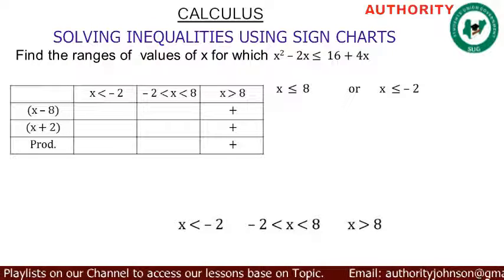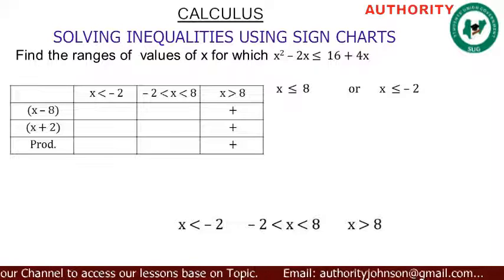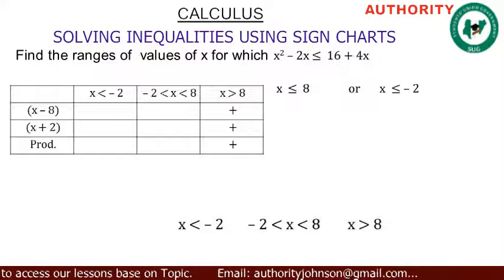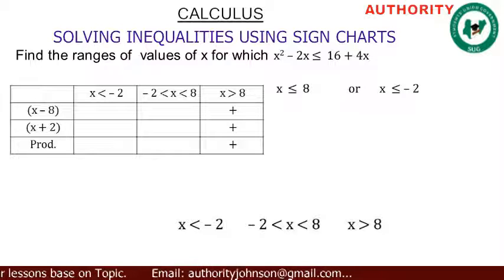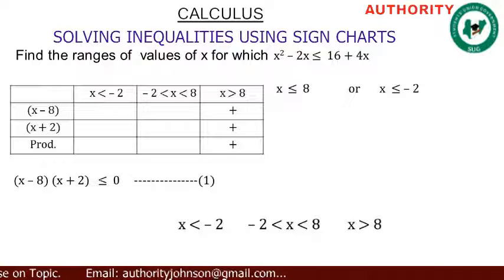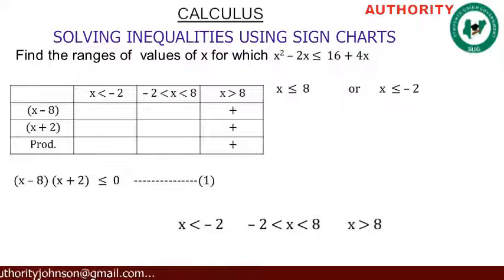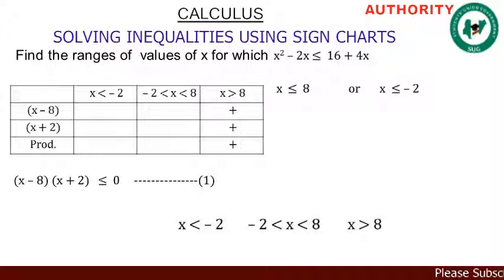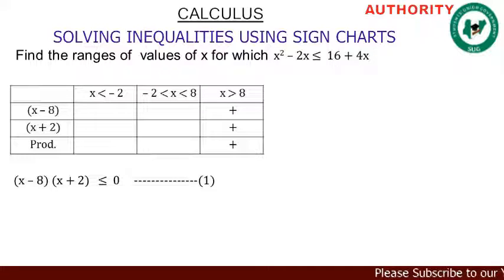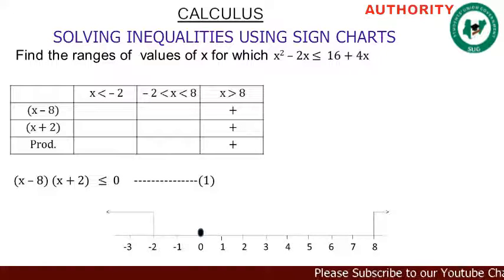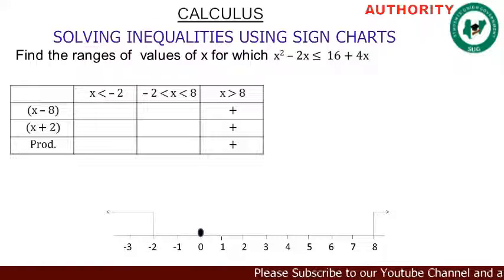In the first column, we write the values we obtained: x minus 8 (the first expression), x plus 2 (the second expression), and then 'product' underneath. Now let's start choosing values from our ranges. For the first range — x less than minus 2 — we can choose minus 3.